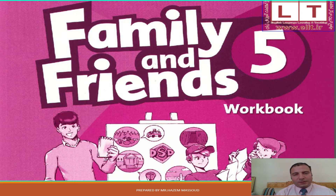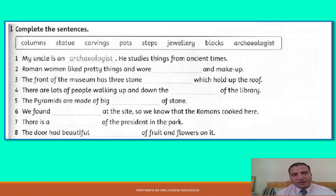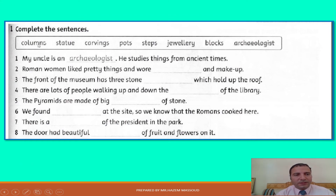And now open your workbook, exercise number one: complete the sentences. I use these words to complete the missing parts: columns, statue, carvings, pots, steps, jewelry, blocks, archaeologist.